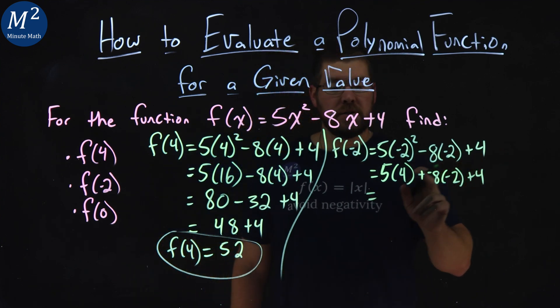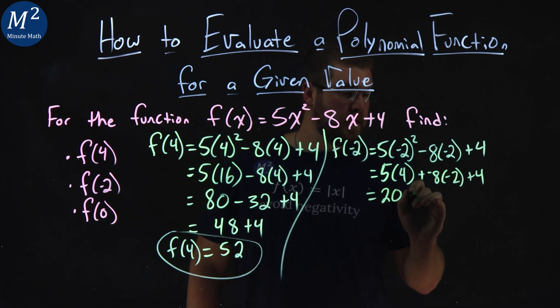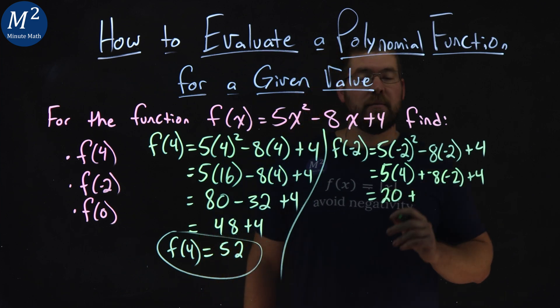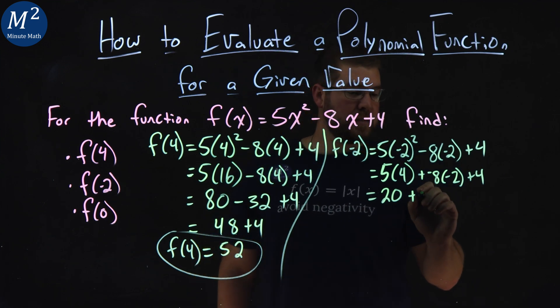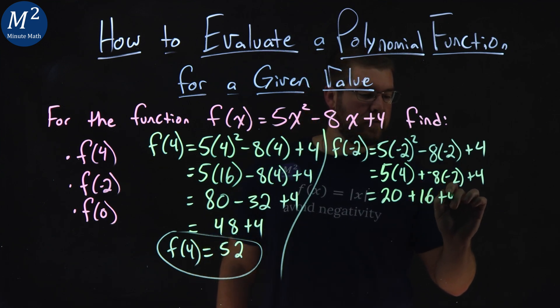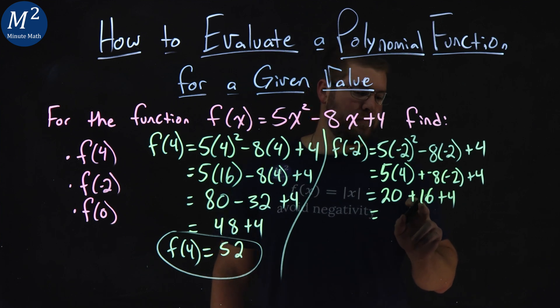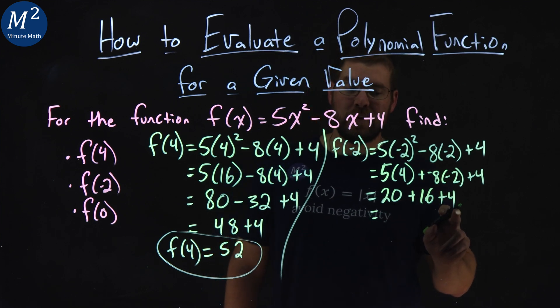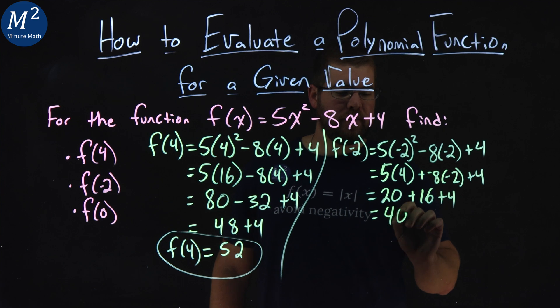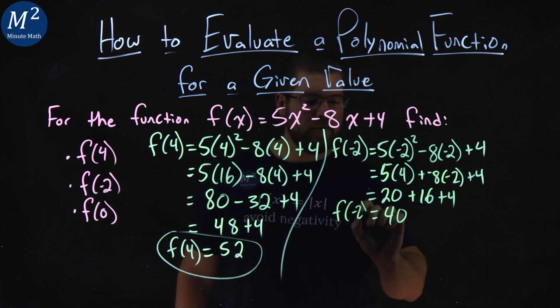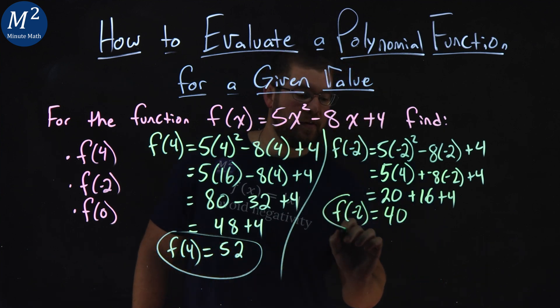Let's deal with the multiplication. 5 times 4 is 20, plus 8. -8 times -2 is a positive number. It's going to be a positive 16, plus 4. 20 plus 16, or let's see, 16 plus 4 is 20, plus another 20 is 40. So f(-2) equals 40.